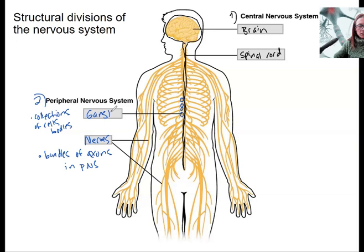So there actually are some, not many collections of cell bodies in the peripheral nervous system. These are called ganglia. One is a ganglion.